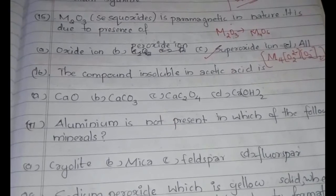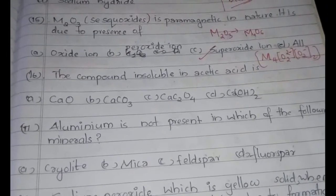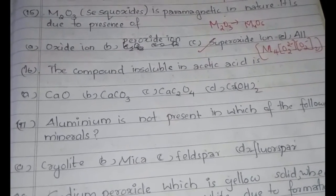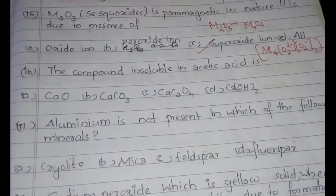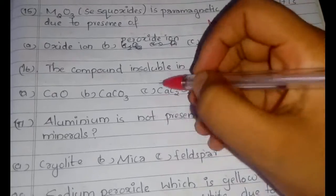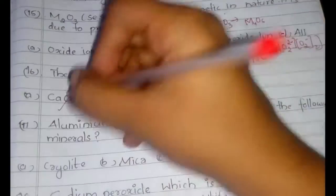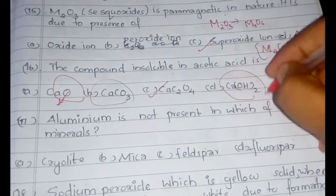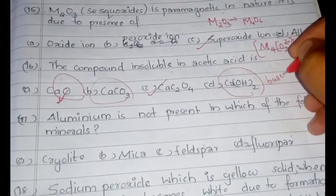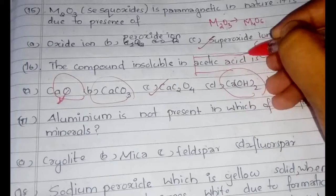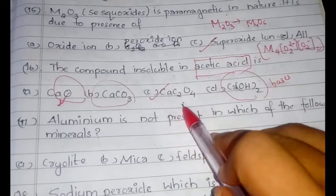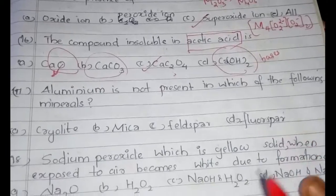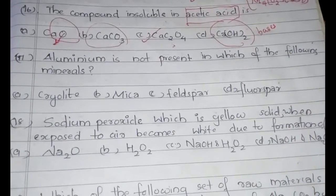The compound insoluble in acetic acid is option C — calcium oxalate. Calcium oxide, calcium carbonate, and calcium hydroxide are all basic, so they react with acetic acid. Calcium oxalate does not react with the acid because it is not basic in nature.